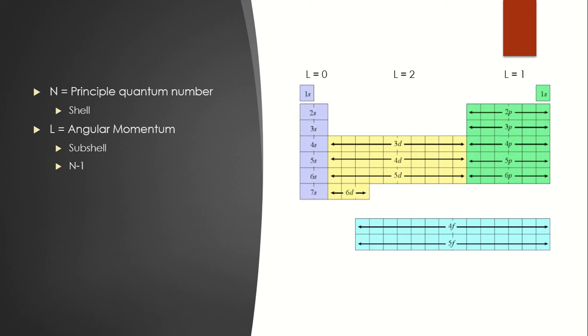So the next one is the angular momentum quantum number, also known as L or the subshell. Now this quantum number is especially important because this will determine the shape/orbital in which the electrons reside. And this is very important for determining reactions and how those happen.